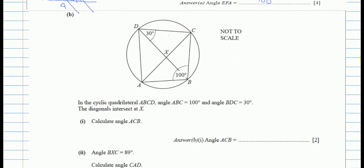Moving to part B: we are given a cyclic quadrilateral ABCD. Angle ABC is 100 and angle BDC is 30. We need to calculate angle ACB — call this X. There are two ways to find this.